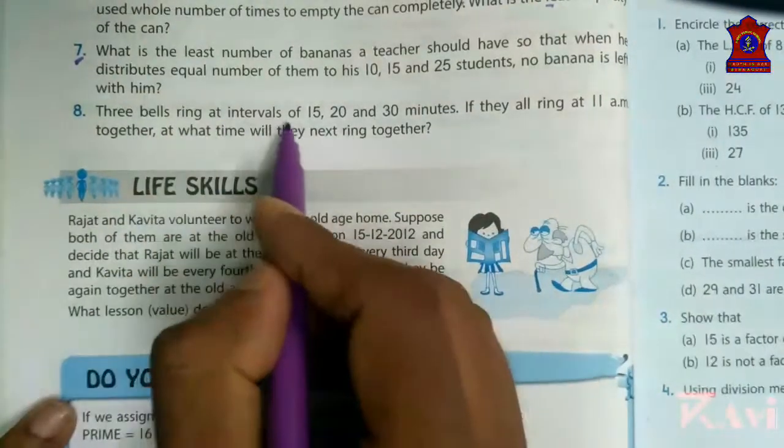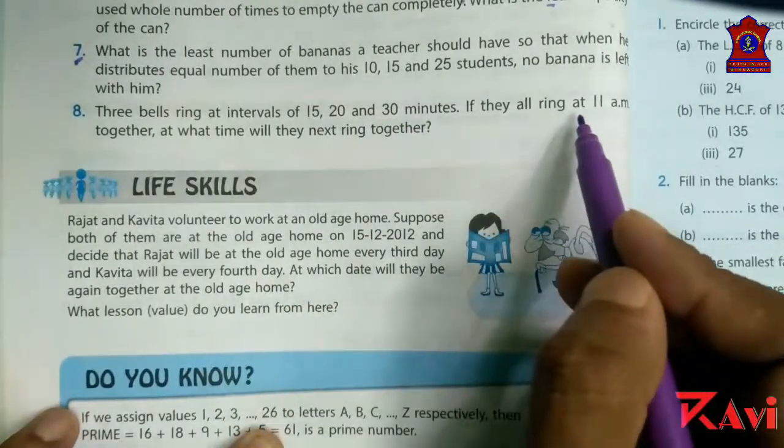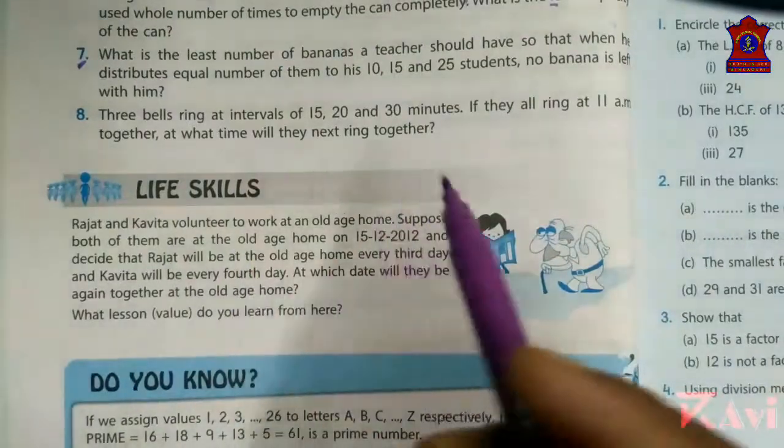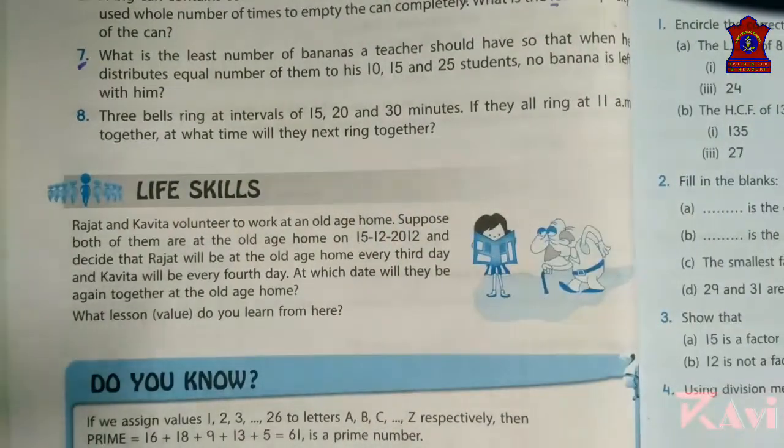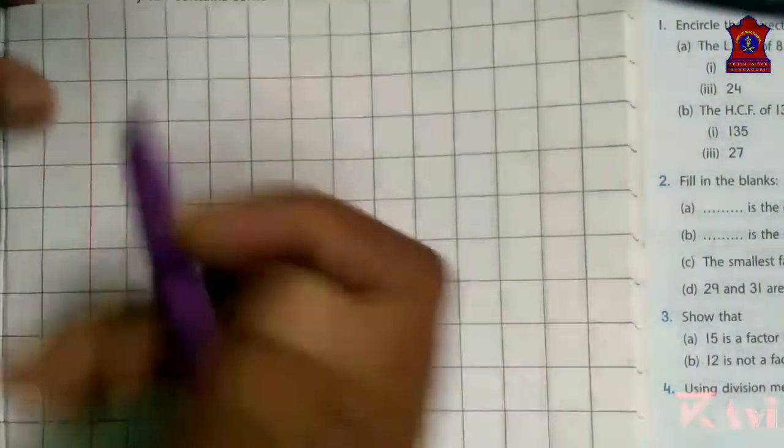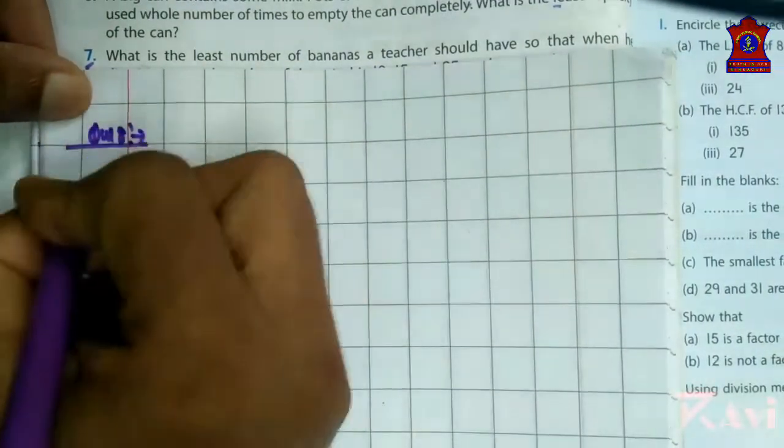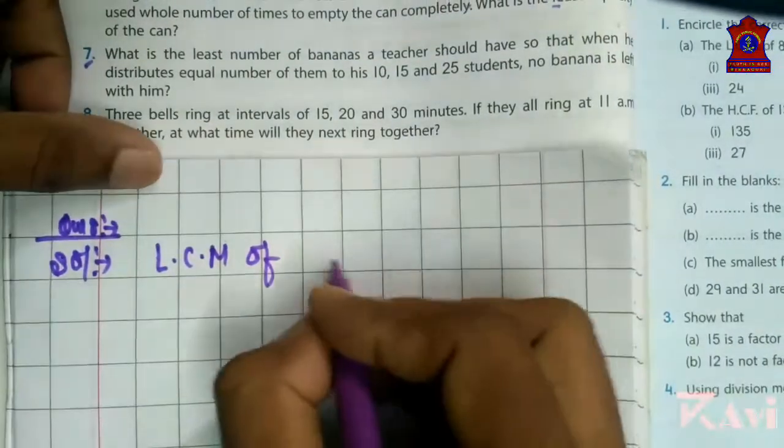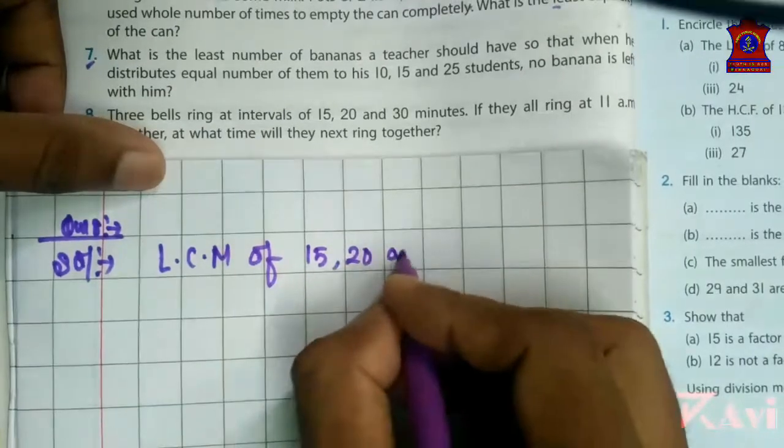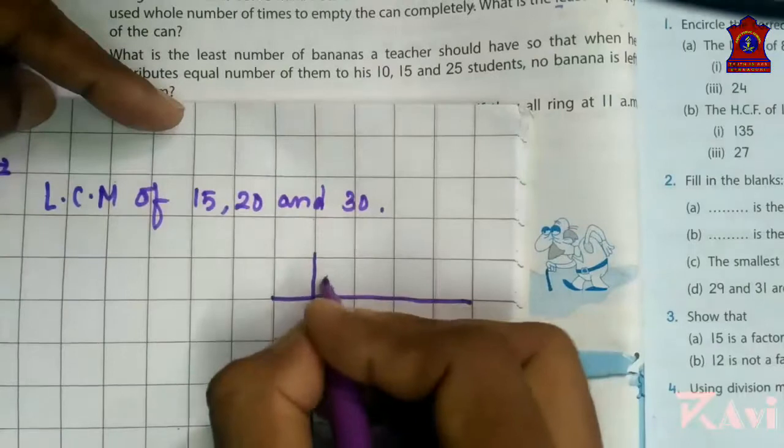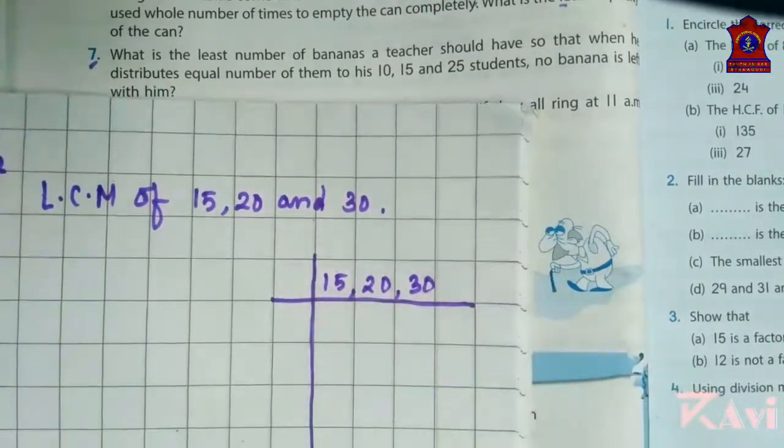Now, look at question number 8. Three bells ring at intervals of 15, 20 and 30 minutes. If they all ring at 11 am together, at what time will they next ring together? Again, to find out this, we need to find LCM of these using division method. We are going to do this question. Question number 8. Solution. LCM of 15, 20 and 30. Same method. 15, 20, 30.